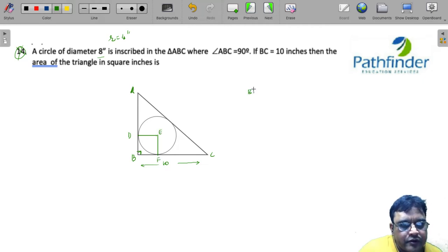The first thing you should notice, B, D, E, F, this forms a square, whose side is equal to radius of the circle that is equal to 4 inches.